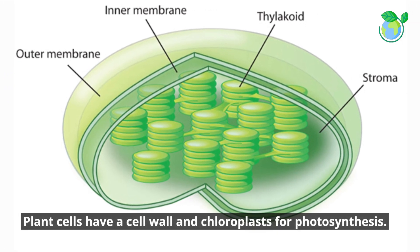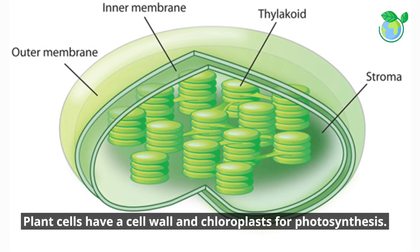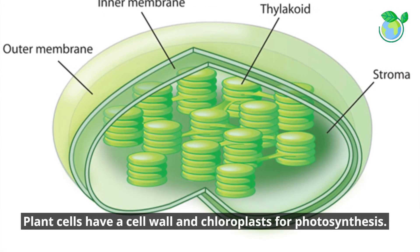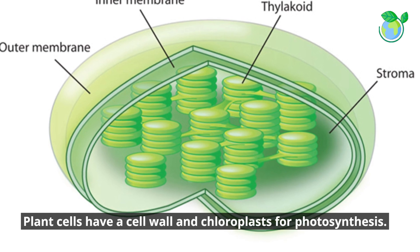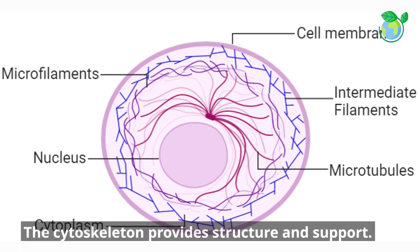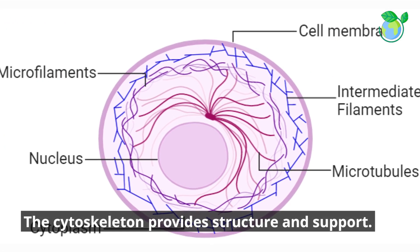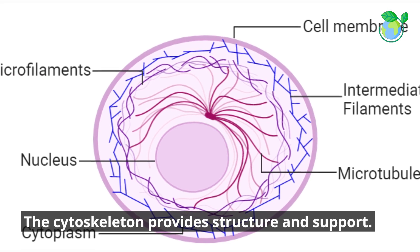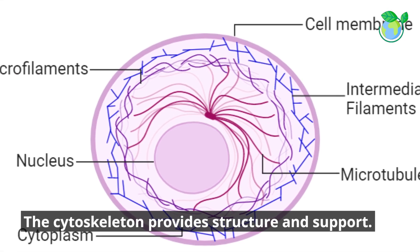Plant cells have a cell wall and chloroplasts for photosynthesis. The cytoskeleton provides structure and support.